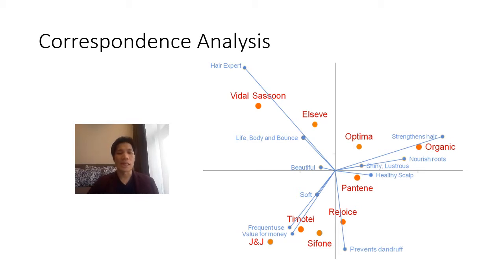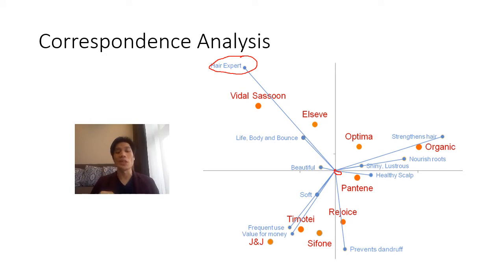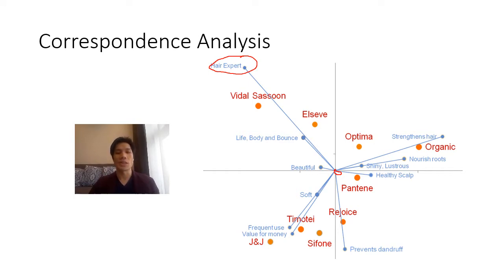The lines here show how far a particular attribute is from the origin of the dimension. An attribute that is further away from the origin shows the greater importance of that attribute in differentiating offerings in the market. So for example, if you want to be a really good shampoo in the market, one of the best ways to differentiate yourself is to have a strong perceived 'hair expert' attribute, and you can really become a strong shampoo brand and differentiate yourself from the rest.